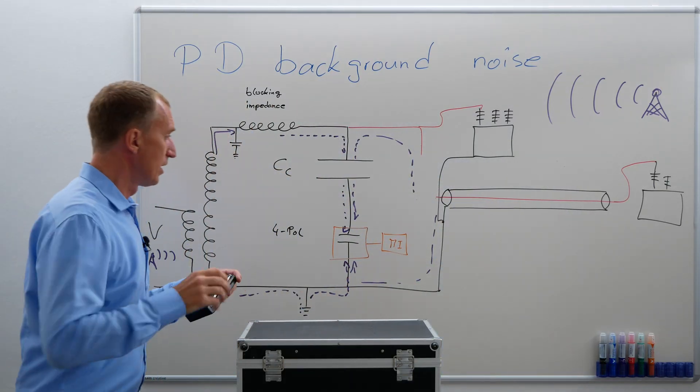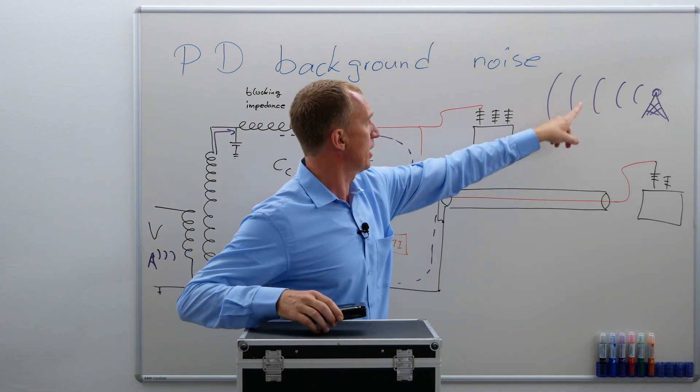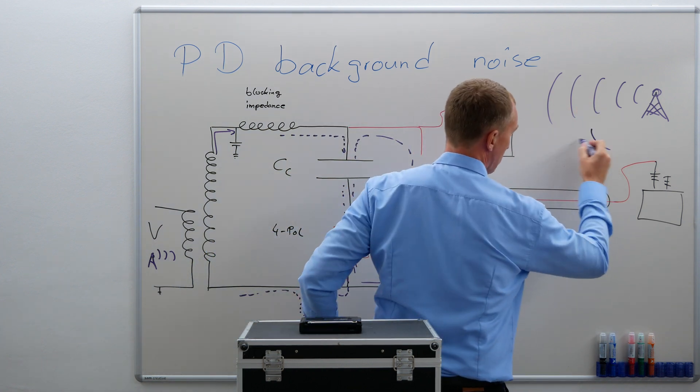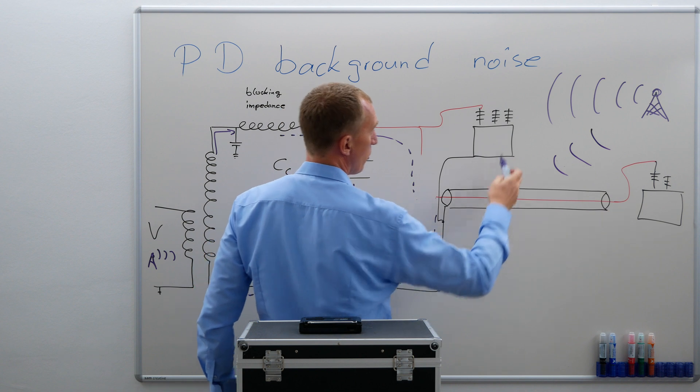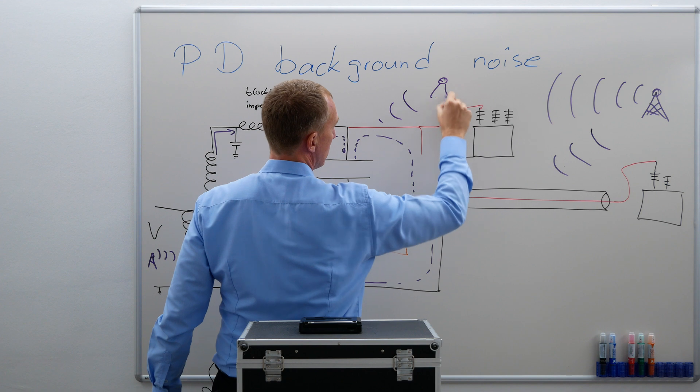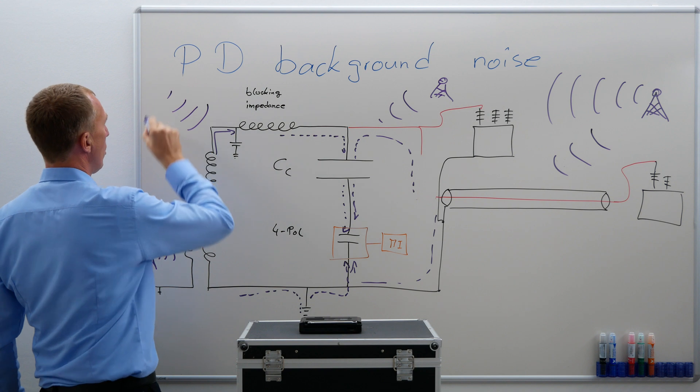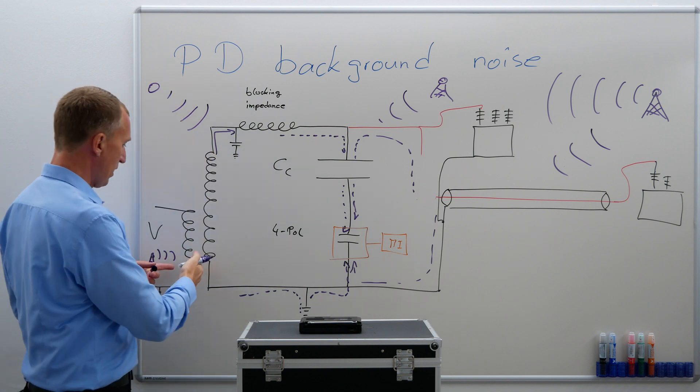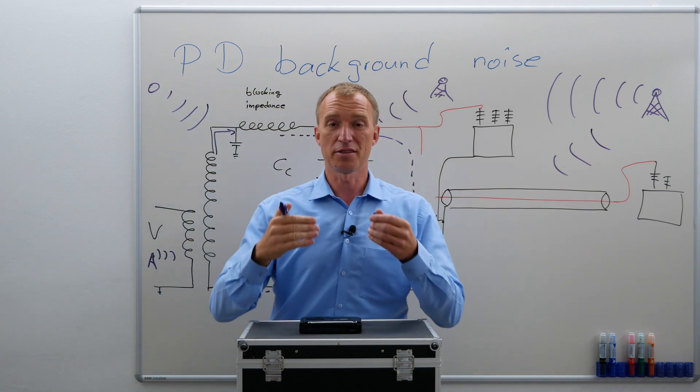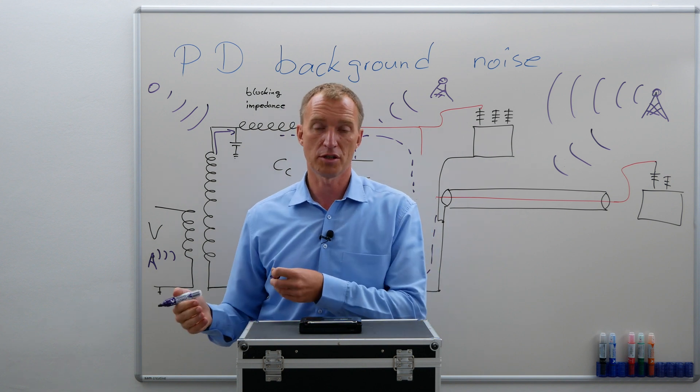We talked about that we can have different kinds of airborne noise that can, of course, couple into our test object. We talked about this before, it can couple in the test object, but it can also couple in our high voltage connection. It can couple into our blocking impedance. It can couple into our voltage source. So as a matter of fact, noise is everywhere and this is one of the biggest challenges. We have to fight noise in order to make a proper partial discharge measurement.